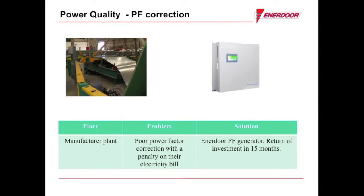An end-user manufacturer called Enerdor was asking questions about power quality. After further discussions, Enerdor discovered the customer was paying an additional fee to the power utility company due to poor power factor. The power factor is outlined on every electricity bill as reactive power and measured in KVAR. The industrial plant had large direct motors which were causing very poor power factor — this particular company was experiencing a power factor of 0.63, where the limit set by the utility is greater than 0.9.